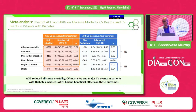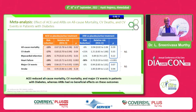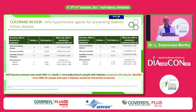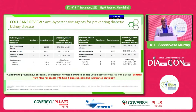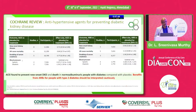A meta-analysis clearly shows the effect of ACE inhibitors versus ARBs on all-cause mortality, CV deaths, and CV events in patients with diabetes. ACE inhibitors versus placebo show significant risk reduction in primary endpoints. However, for ARBs versus placebo, there is no solid data so far — their renal outcome benefits should be interpreted with some caution. ACE inhibitors are confirmed to reduce all-cause mortality, CV mortality, and major CV events. The Cochrane review on antihypertensive agents for preventing diabetic kidney disease found ACE inhibitors prevent new-onset diabetic kidney disease and death.